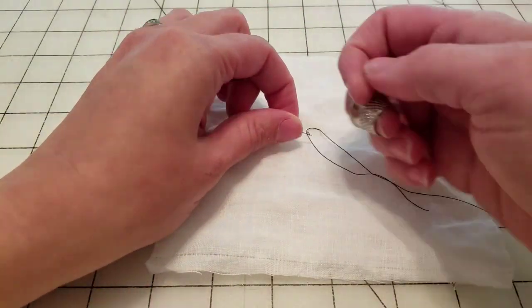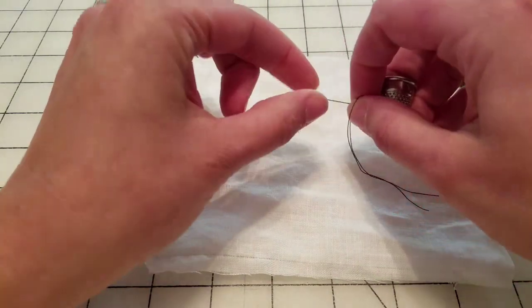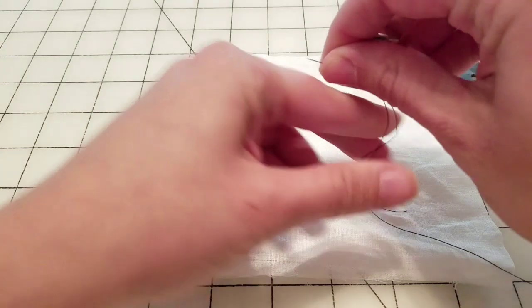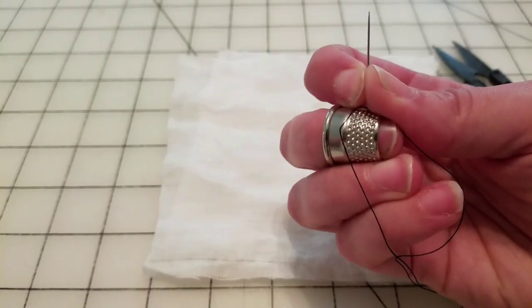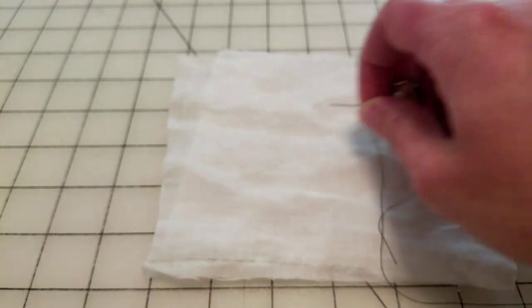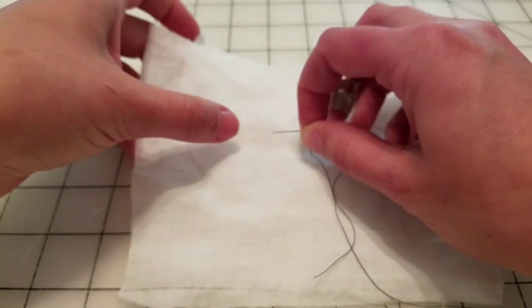First, you're going to curl your hand up like this and it gets braced on the side here, and then you hold it like this and you're going to push with your whole hand as you're sewing instead of pulling with your fingers.